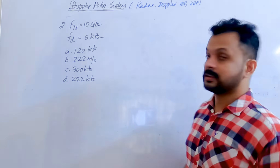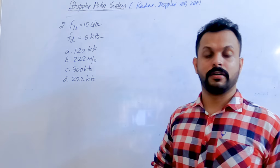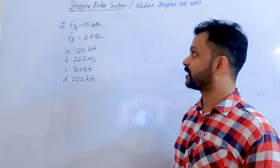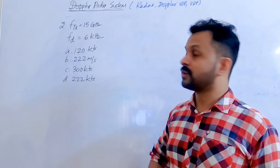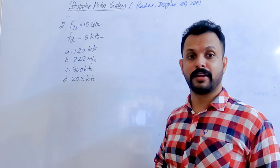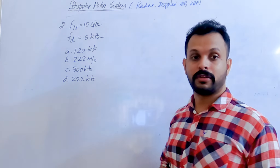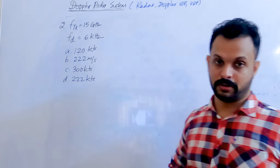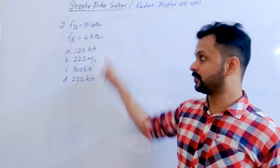When an aircraft is directly flying away from a transmitter, transmitting on a frequency of 15 gigahertz, a frequency shift of 6 kilohertz is measured. You'll have to find the speed of the aircraft.